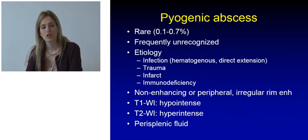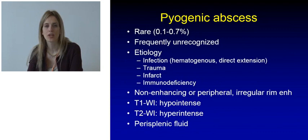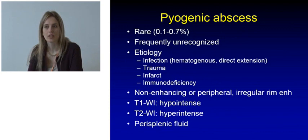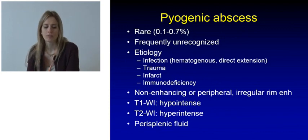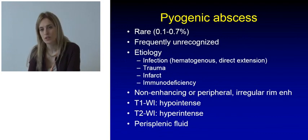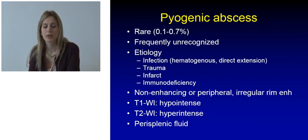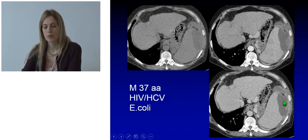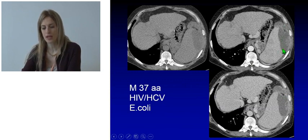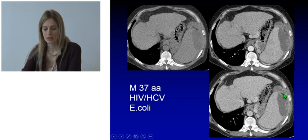Pyogenic abscess is a rare splenic lesion, occurring in up to 1% of the population and often unrecognized clinically. It can have various etiologies — infection, trauma, infarct, and immunodeficiency being the most common. It appears as a non-enhancing lesion or one showing peripheral irregular rim enhancement. On T1-weighted imaging it is hypo-intense; on T2-weighted imaging it is hyper-intense. It is often accompanied by perisplenic fluid. Here we can see an example of a 37-year-old male with co-infection by HIV and HCV, showing a large splenic abscess caused by Escherichia coli — a large hypoattenuating fluid lesion with a peripheral wall-enhancing wall.